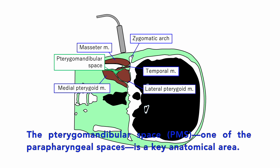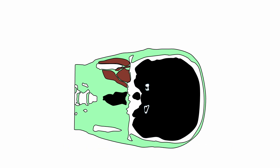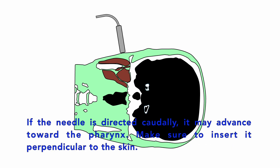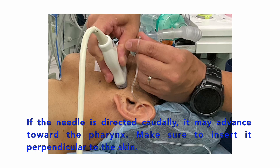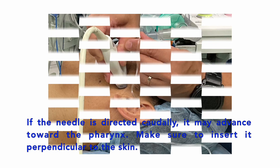In this block, the pterygomandibular space — one of the parapharyngeal spaces — is a key anatomical area. If the needle is directed caudally, it may advance toward the pharynx. Make sure to insert it perpendicular to the skin.